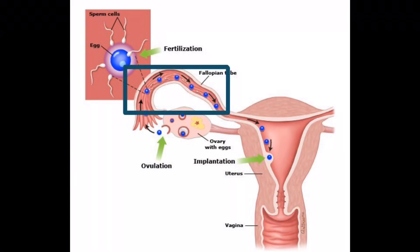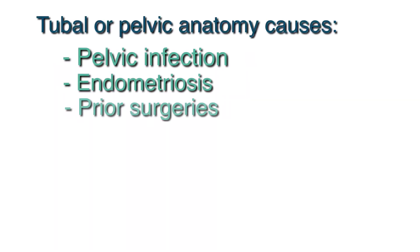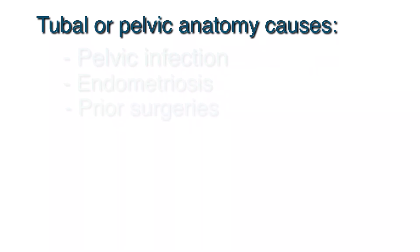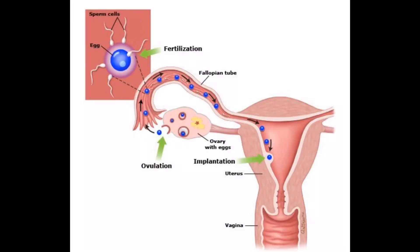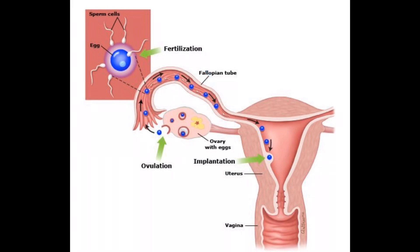Next we'll look at causes of infertility related to the fallopian tubes or pelvic anatomy. Prior pelvic infection, endometriosis, or prior surgeries are the main causes for distorting the pelvic anatomy. These conditions can result in the tubes being blocked either at the beginning part of the tube — called the proximal tube — or at the end of the tube — called the distal part. The tubes can also be blocked if the patient has a history of prior tubal ligation, where the tubes will be occluded in the mid portion.